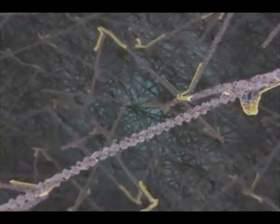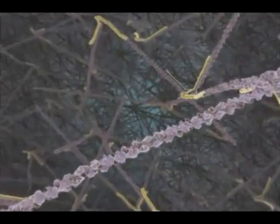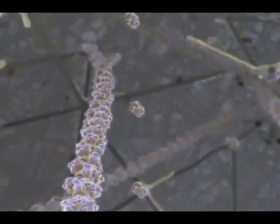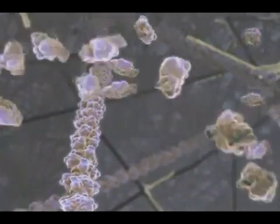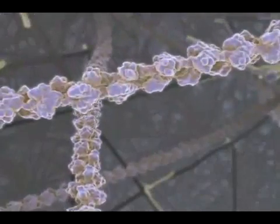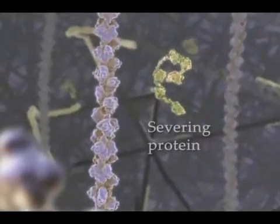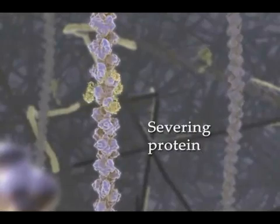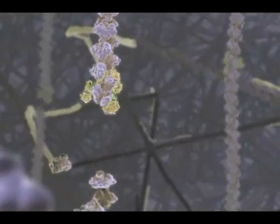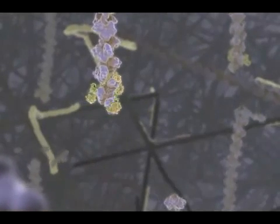Filaments, capped at their minus ends by a protein complex, grow away from the plasma membrane by the addition of actin monomers to their plus end. The actin network is a very dynamic structure with continuous directional polymerization and disassembly. Severing proteins induce kinks in the filament and lead to the formation of short fragments that rapidly depolymerize or give rise to new filaments.